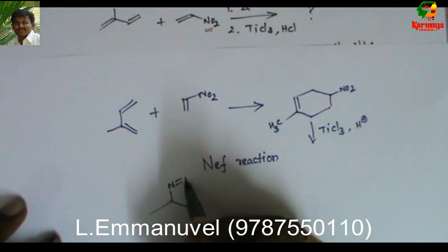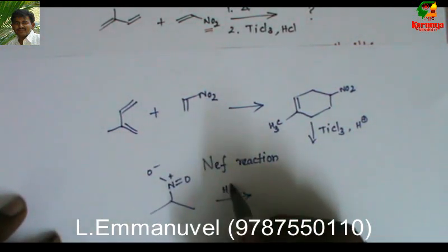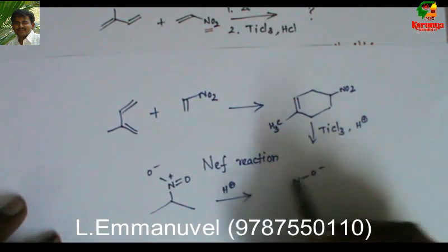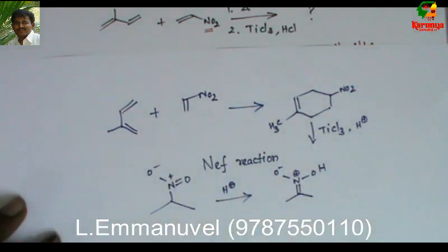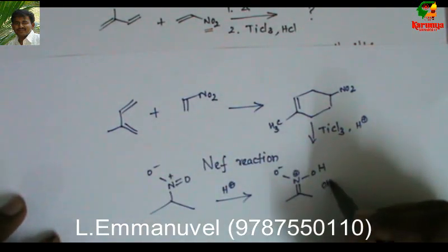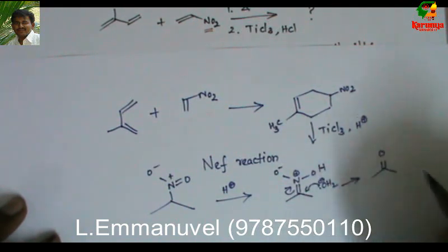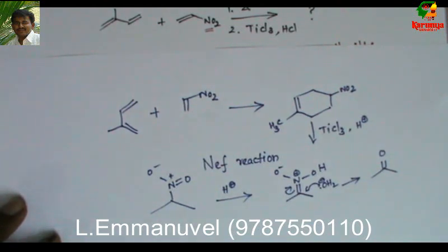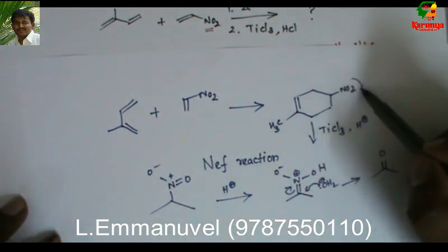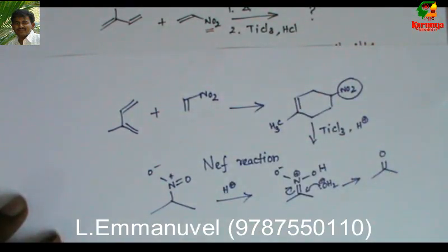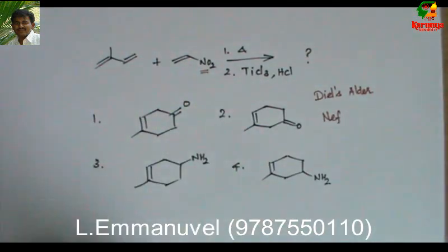The Nef reaction is very important because we can get rid of the nitro group and in its place introduce a C=O. Aliphatic nitro compounds, when treated with H+, are attacked by water and give a ketone. So in the Nef reaction, the NO2 group is removed and replaced by C double bond O. In the first option, you can find that product — NO2 has been removed and C=O has been introduced.